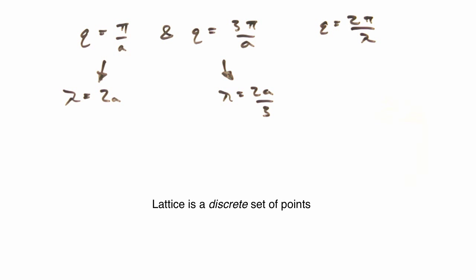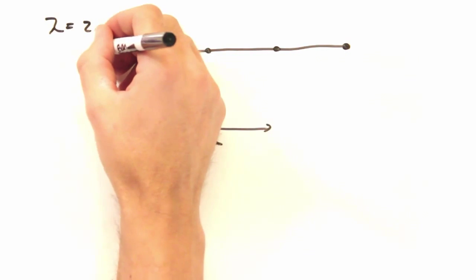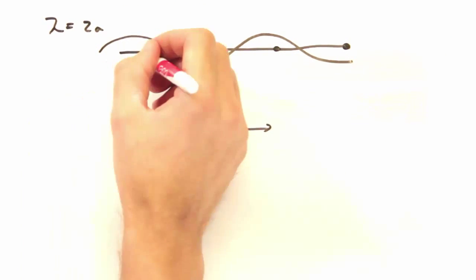So it turns out the fact that our lattice is a discrete set of points is the key to all of this. Let's draw our 1D lattice and overlay the 2a wavelength. Each atom sits at a peak or a trough as we've seen before.